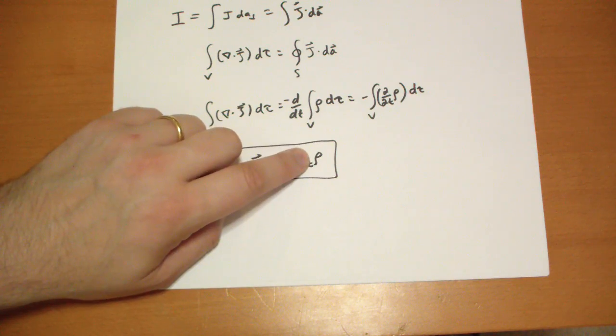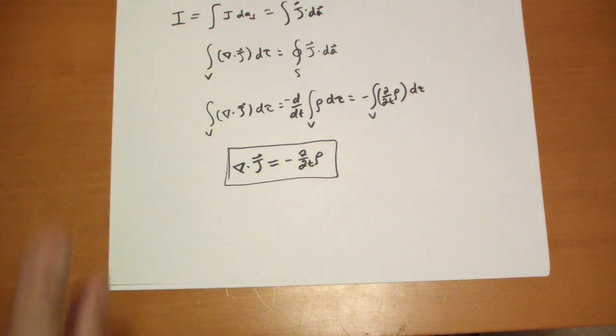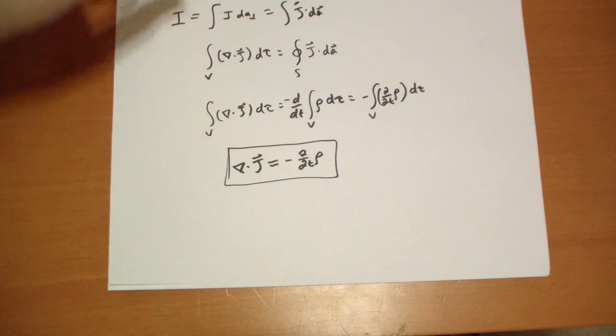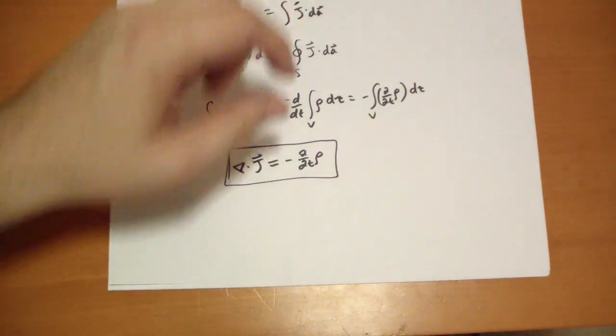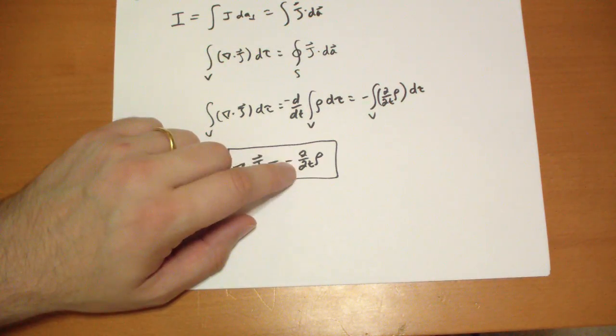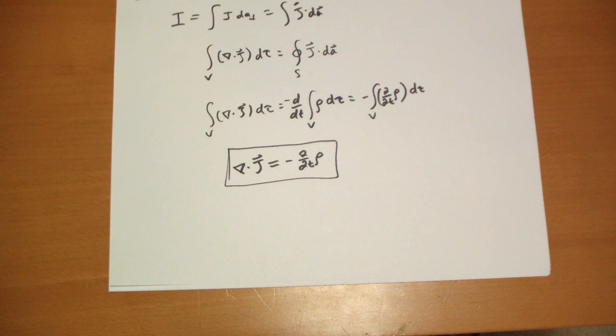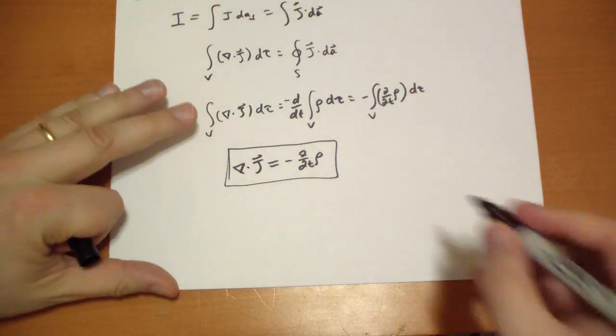If you have a point of divergence where the current is flowing away from a point, that means the charge density is decreasing at that point. And that's called the continuity equation.